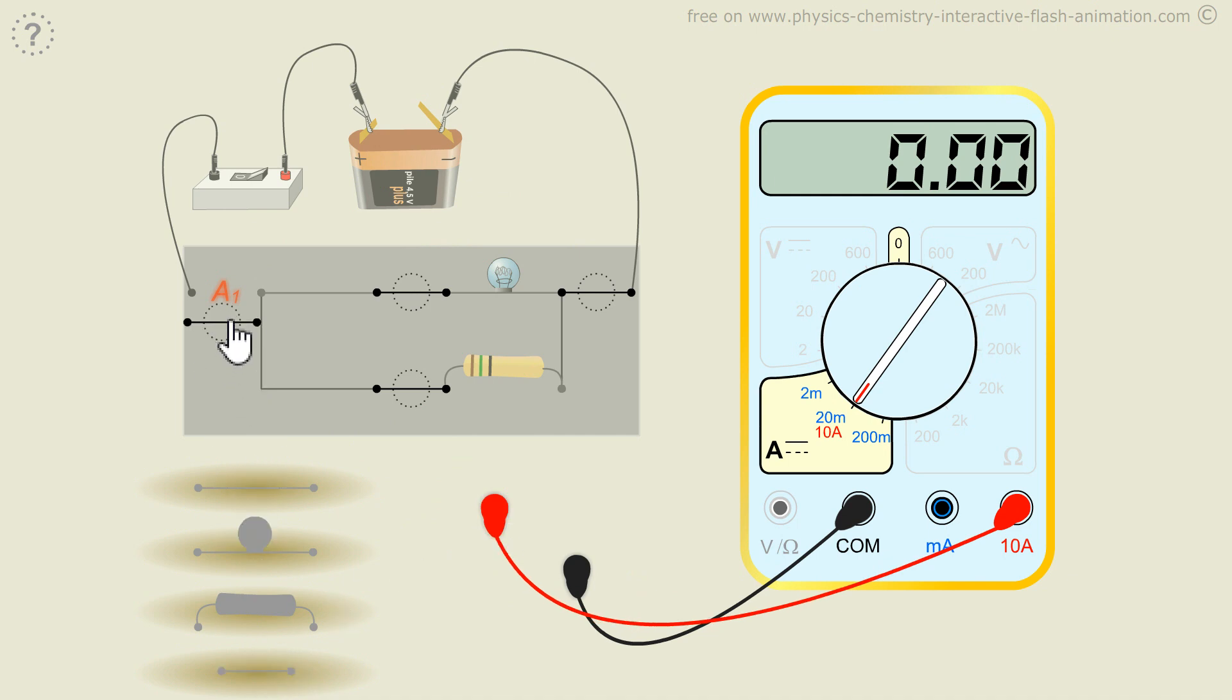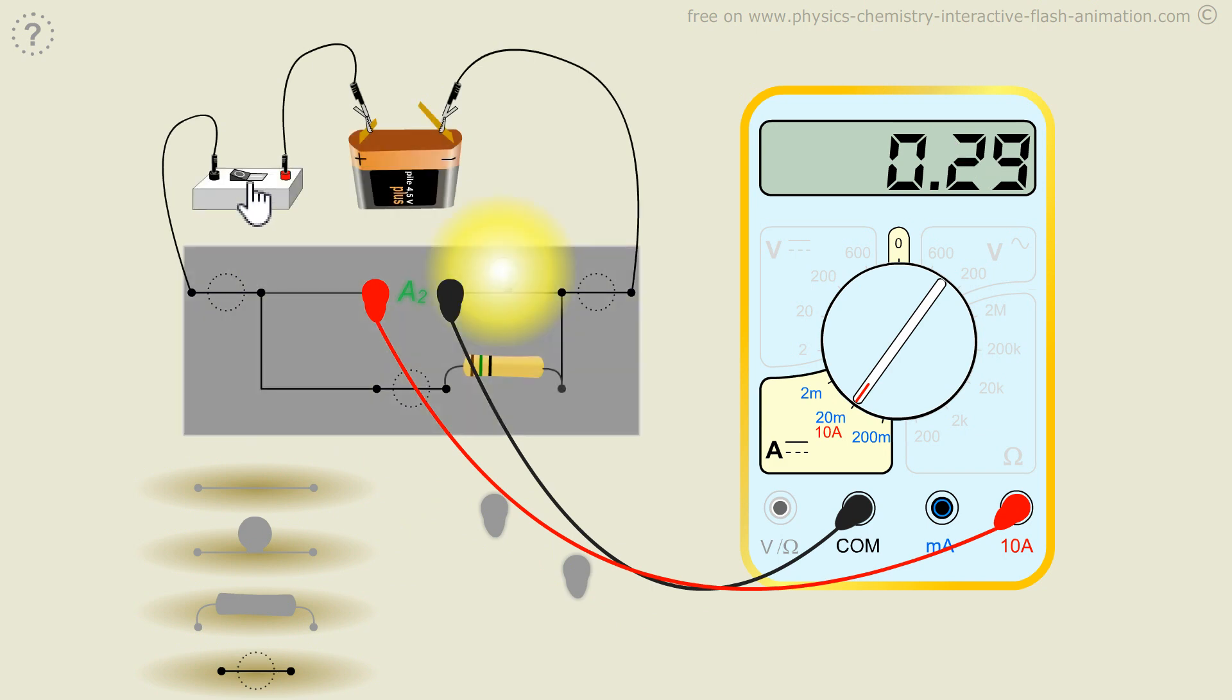Next, I measure the branch current, the one that will pass through the bulb, which I call I2. And I find 0.29 amps. I note 0.29A.